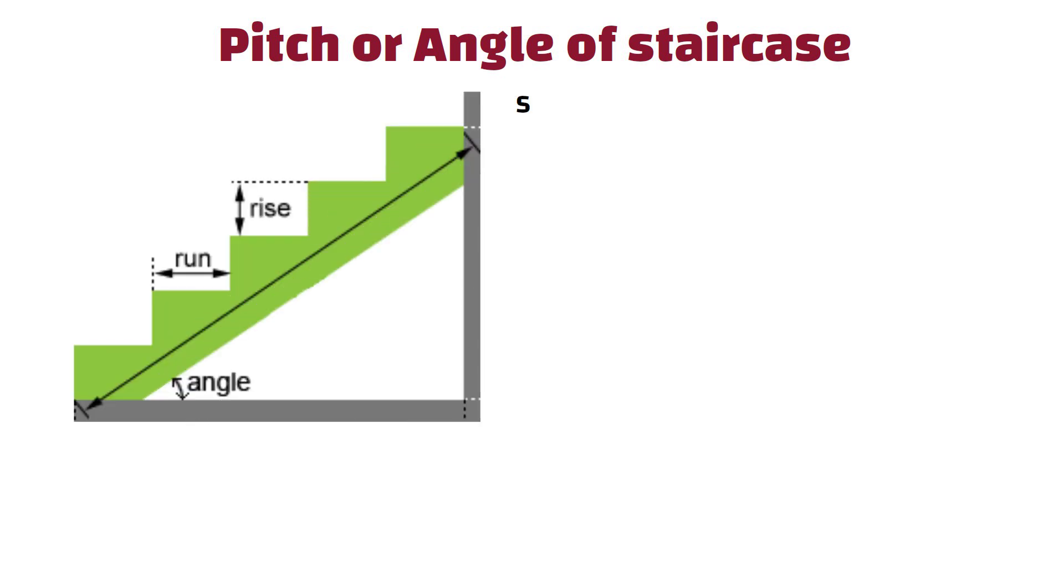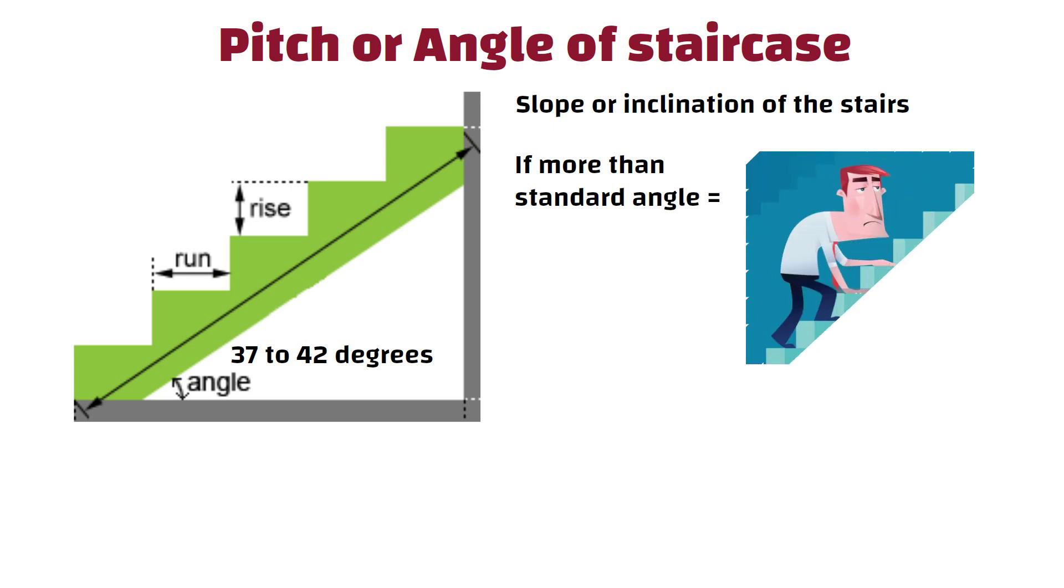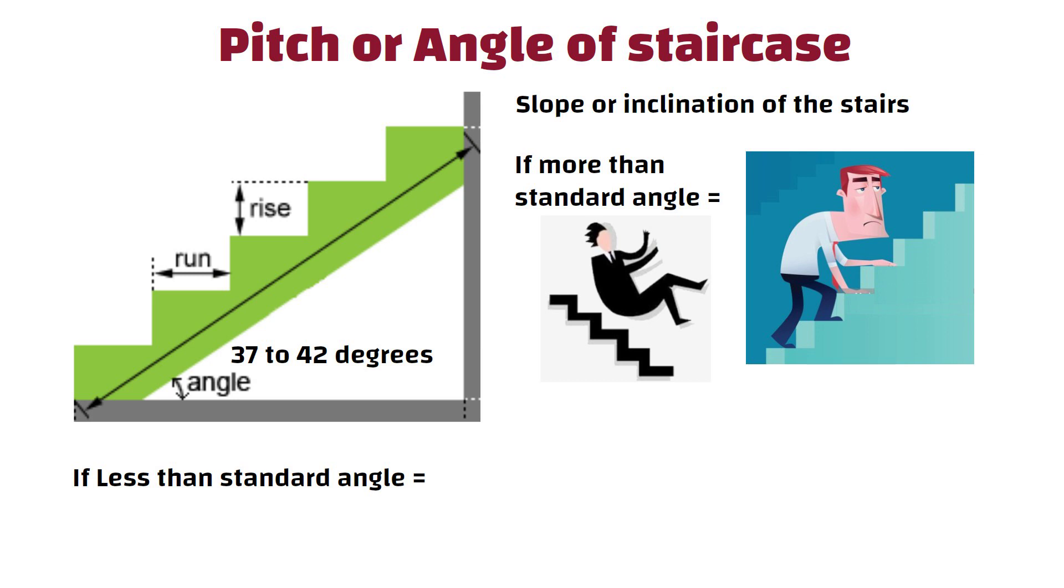7. Pitch or Angle of Staircase. The pitch or angle of staircase refers to the slope or inclination of the stairs. A common guideline is to aim for a pitch between 37 to 42 degrees. If the pitch of a staircase is more than the standard angle, then it may cause fatigue more quickly and increase the risk of tripping or falling. If the pitch of a staircase is less than the standard angle, then it can be more tiring since they require more steps.